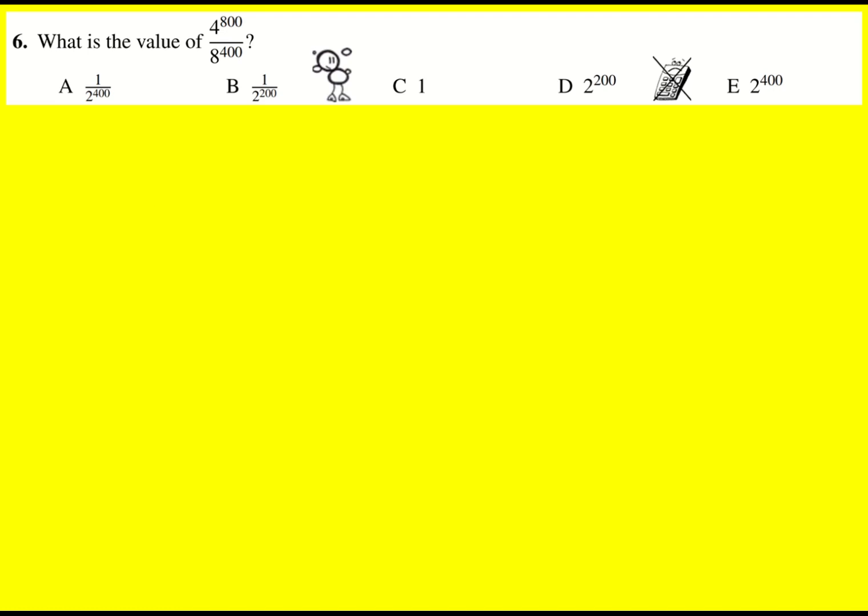We're asked to work out the value of 4 to the power of 800 divided by 8 to the power of 400, and obviously we're not expected to work out each value and then divide it.